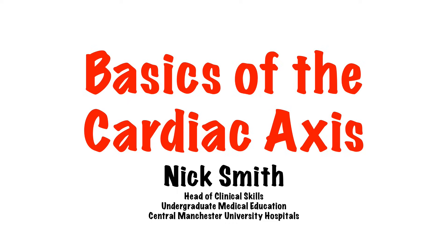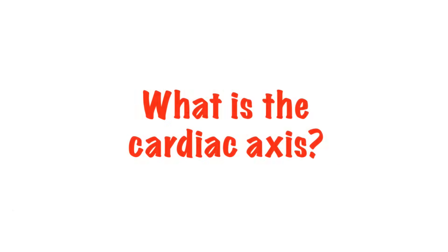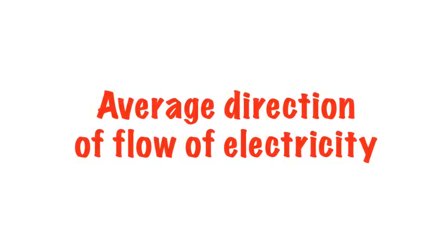Hi, my name is Nick and this 5-minute talk is about the cardiac axis. So, what is the cardiac axis? It's the average direction of the flow of electricity or depolarisation through the heart — the mean electrical vector.